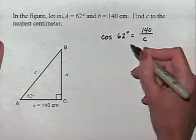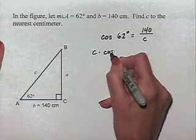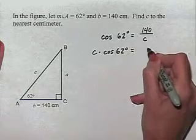To solve this, we can multiply both sides of the equation by C. C multiplied times the cosine of 62 degrees equals 140.